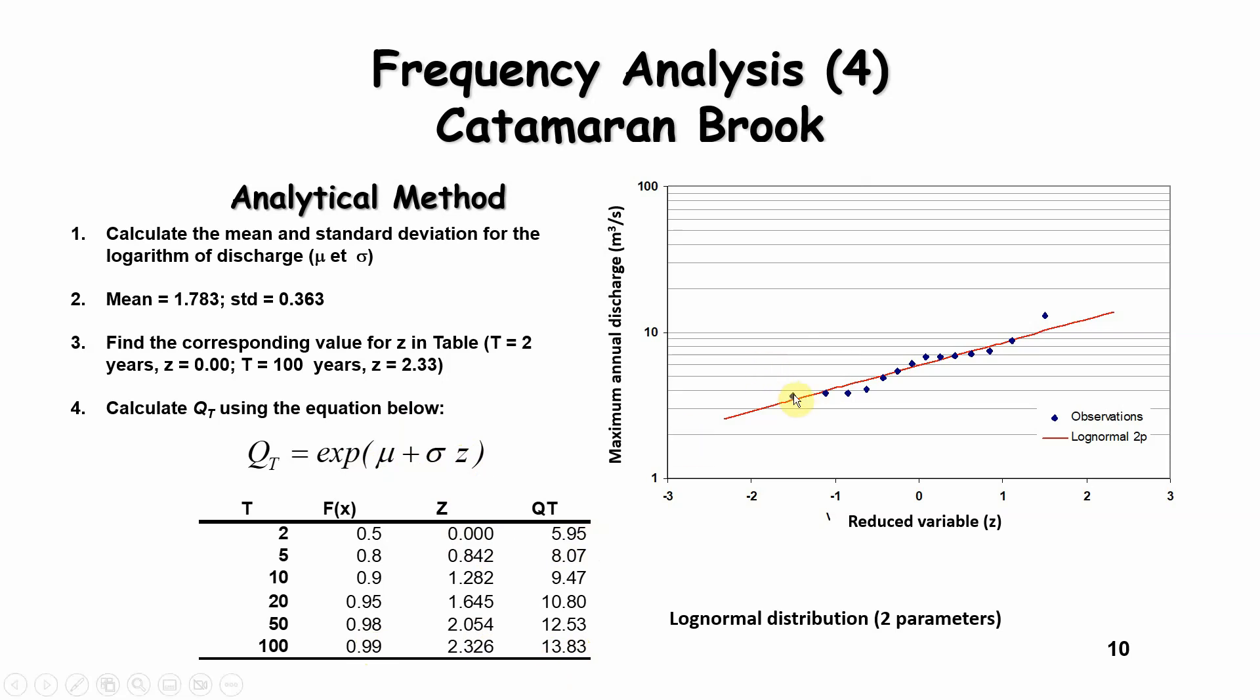Now, this plot is the same as the one before, with each observation and each z value, but the red line here, rather than drawing it yourself on a piece of paper, is calculated using the normal distribution with log transformed data.